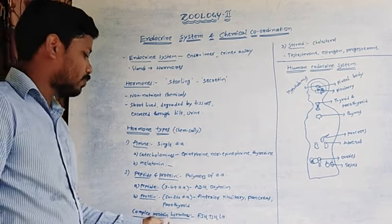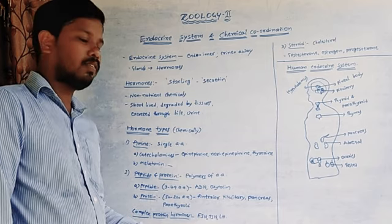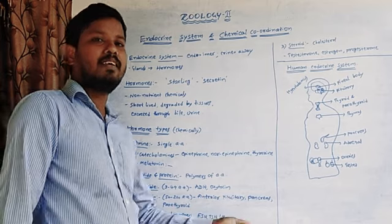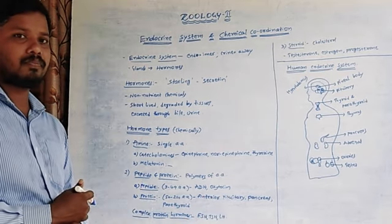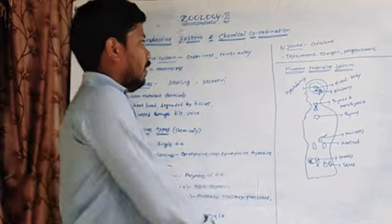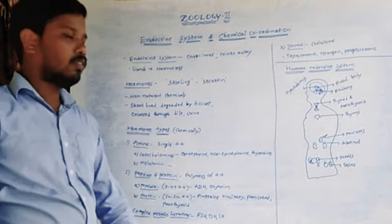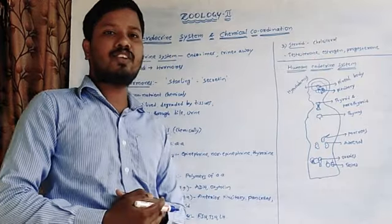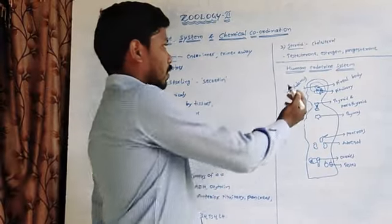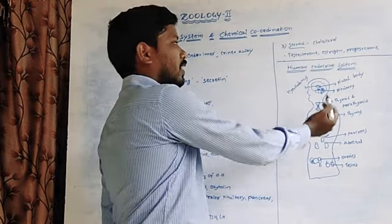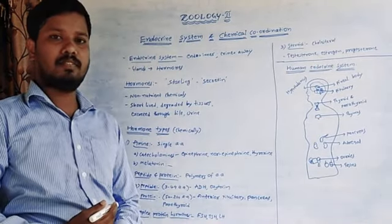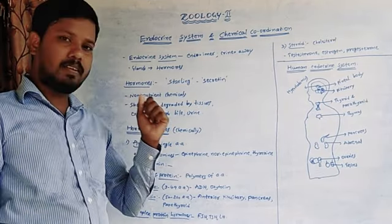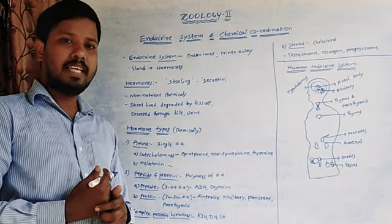Complex protein hormones include follicle stimulating hormone, thyroid stimulating hormone, and luteinizing hormone. The third type is steroid hormones. Steroid hormones are derivatives of cholesterol and include testosterone, estrogen, and progesterone. This is about hormones and their types.